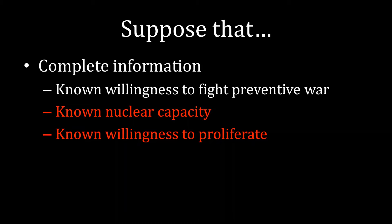There was no private information that one side had that the other did not. For the topic at hand, this meant that the opponent knew the potential proliferator's capacity to build nuclear weapons, as well as their willingness to proliferate. In practice, both of those are tall orders. The purpose of this lecture is to motivate why an opponent has that sort of uncertainty.